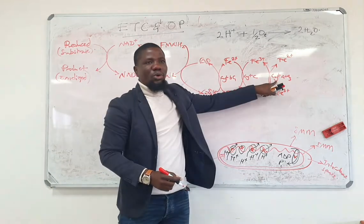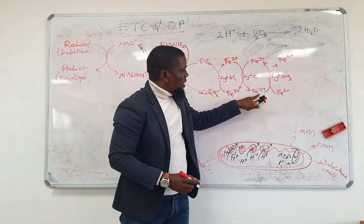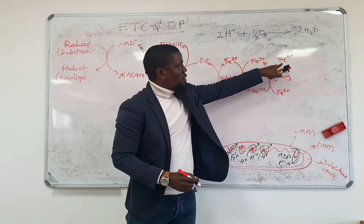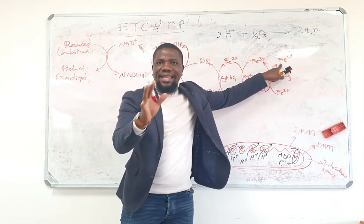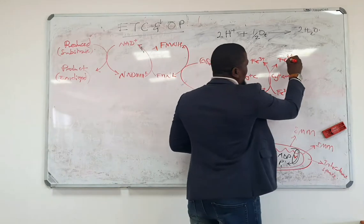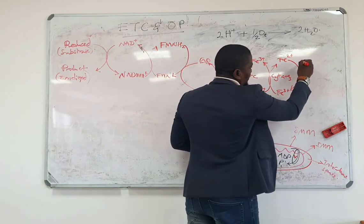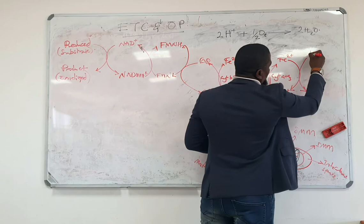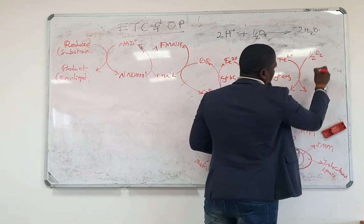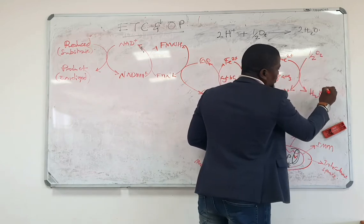This is cytochrome oxidase. It will be reduced to that. Finally, what we are waiting for, this reduced iron would then be able to reduce one oxygen and produce water.